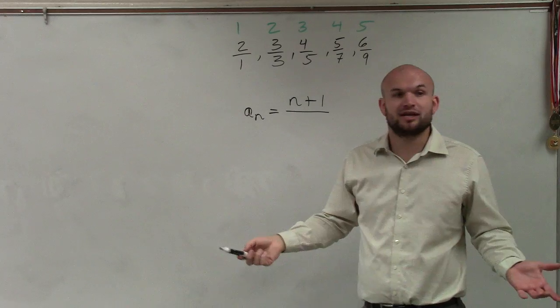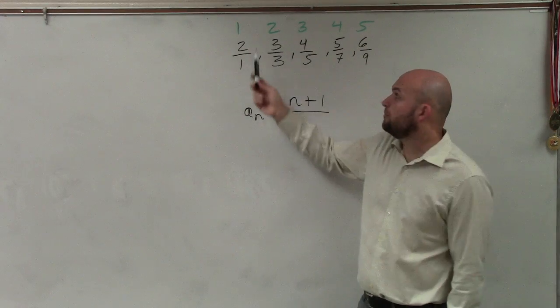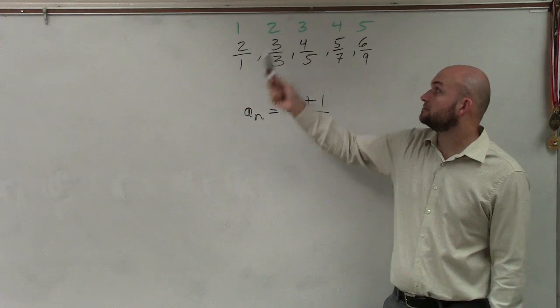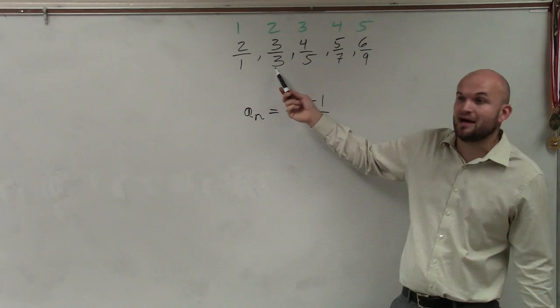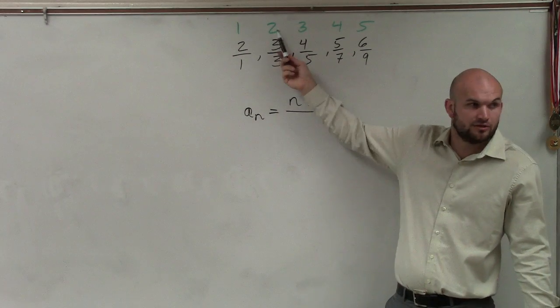Next thing is I look for multiplication and division. To go from one to one, I have to multiply by one. If I go from two to three, if I multiply by one, I'm not going to get three, I'm going to get two.